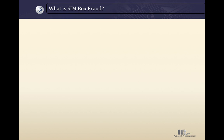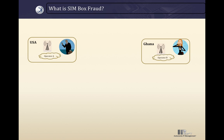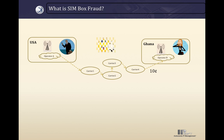Let me demonstrate this. Let's see a legitimate international calling scheme between two countries — USA to Ghana. Steve, in USA, calls Martha, who lives in Ghana. In a normal scenario, the call is routed to multiple transit carriers and then to Operator B's mobile network. Transit Carrier 4 pays Operator B the regulated rate of $0.10 per minute in order to have the call terminated. Then the call is routed through Operator B's cellular infrastructure and is delivered to Martha.